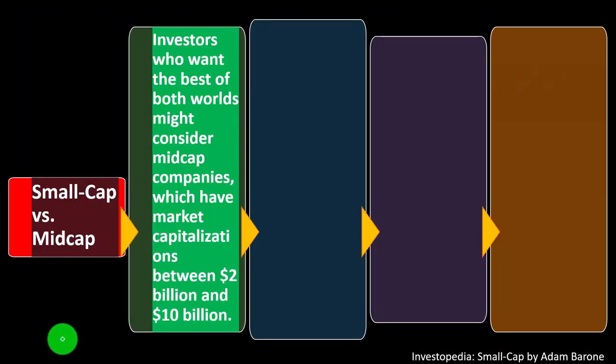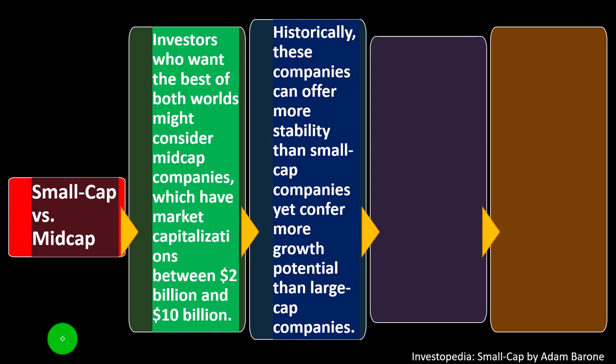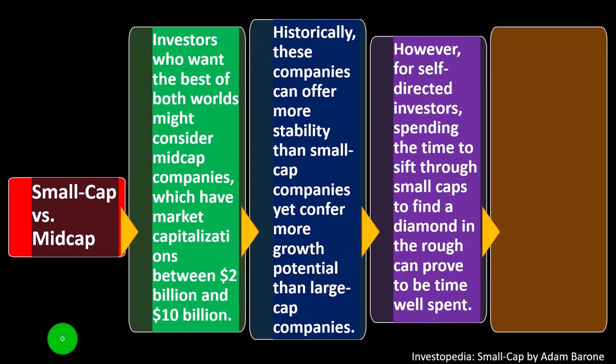We've got small cap versus mid cap. Investors who want the best of both worlds might consider mid cap companies, which have market capitalizations between $2 billion and $10 billion. Historically, these companies can offer more stability than small cap companies, yet more growth potential than large cap companies. The mid cap sits somewhere in between the two. For self-directed investors, spending the time to search through small caps to find a diamond in the rough can prove to be time well spent.